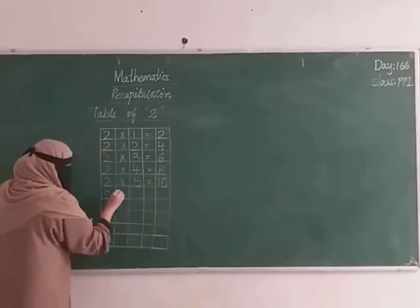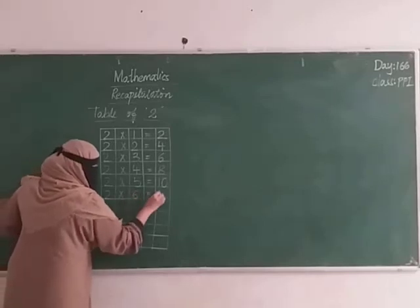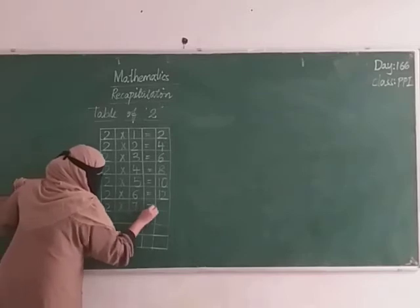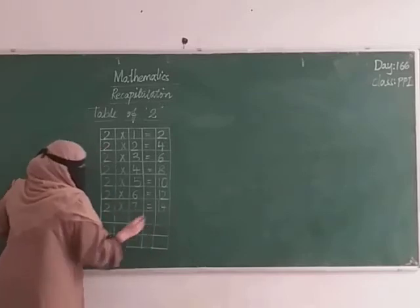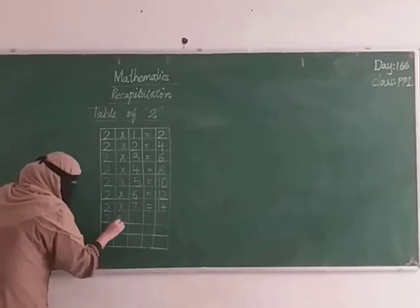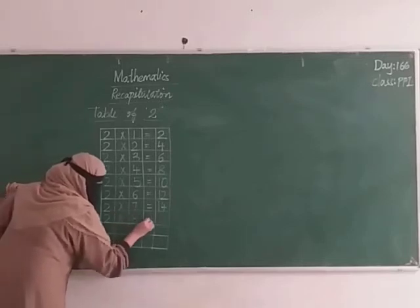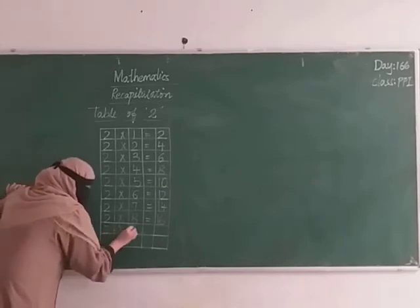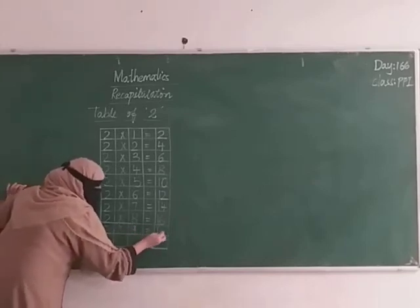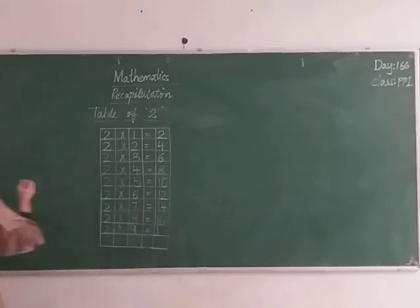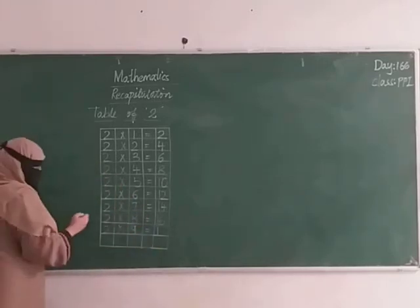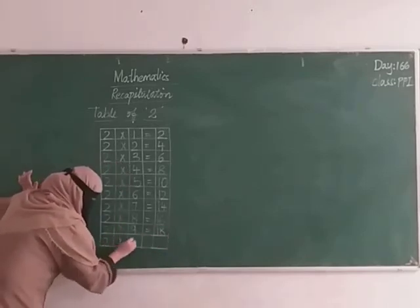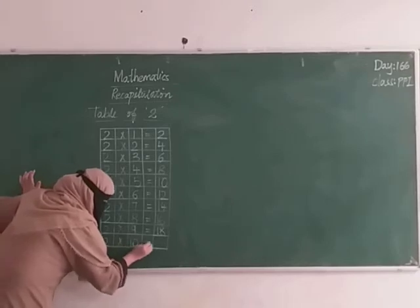Two sixes are twelve. Two sevens are fourteen. Two eights are sixteen. Two nines are eighteen. Two tens are twenty.